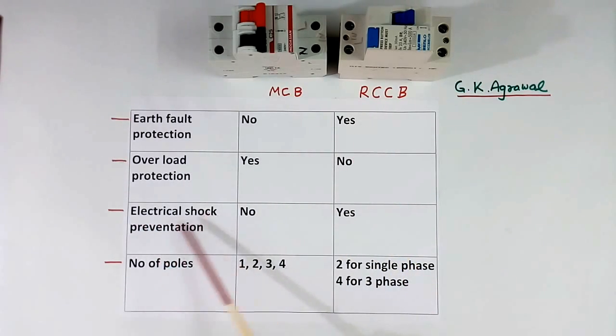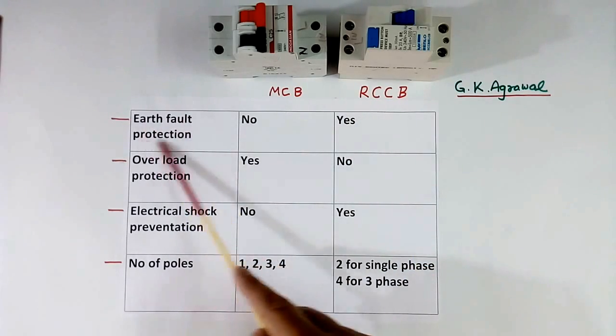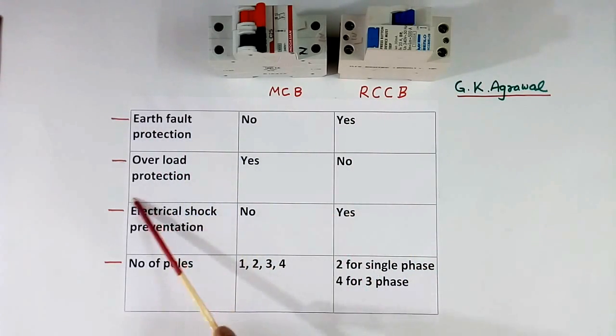Then electrical shock protection. Because RCCB has earth fault protection, this means it has electrical shock protection. MCB does not have this.